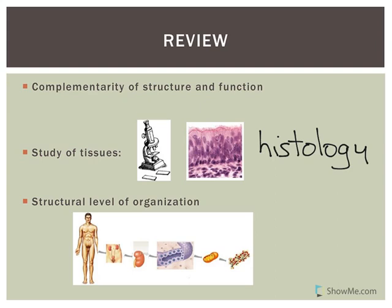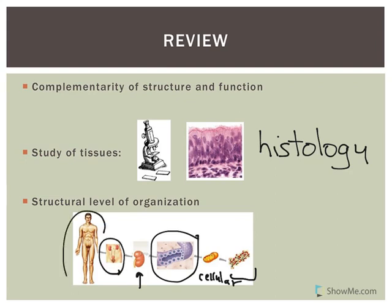We started with the molecular level, or the chemical level. Then there's the cellular level — for example, mitochondria are part of the cellular level. Here's the tissue level. The tissues make up organs, organs make up organ systems, and all the organ systems help make up an organism. So that's a review of something we've talked about previously.